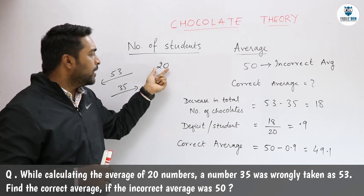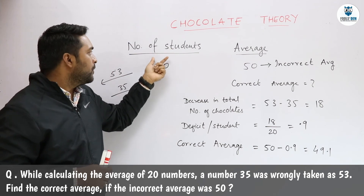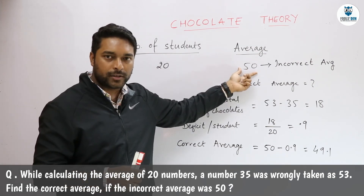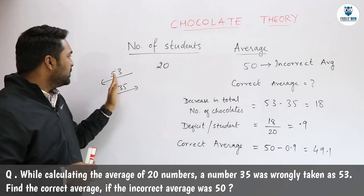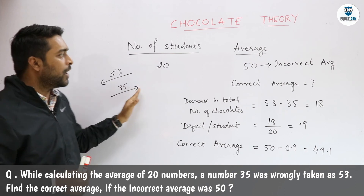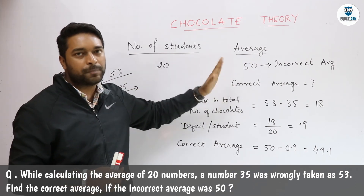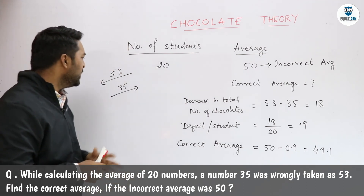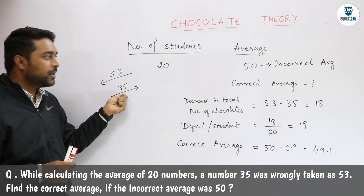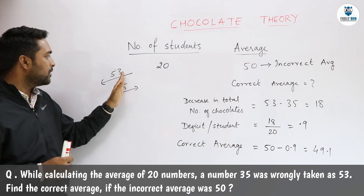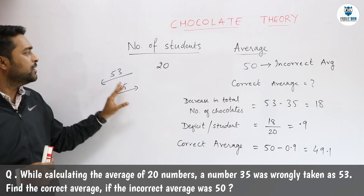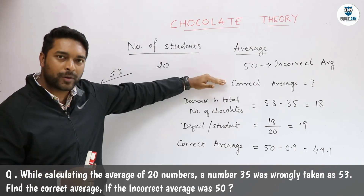We will consider numbers as students. So there are 20 students in the class and each of them has 50 chocolates. Now a student leaves with 53 chocolates and another student joins with 35 chocolates, and we have to find the new number of chocolates per student. If the student joining also had 53 chocolates, the average would remain the same — the person leaving has 53 and the person joining also has 53, so there would be no change in the average; it would remain 50.